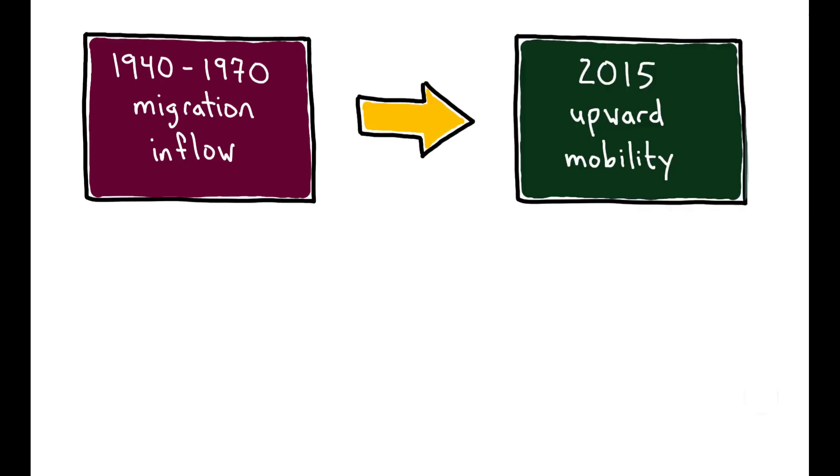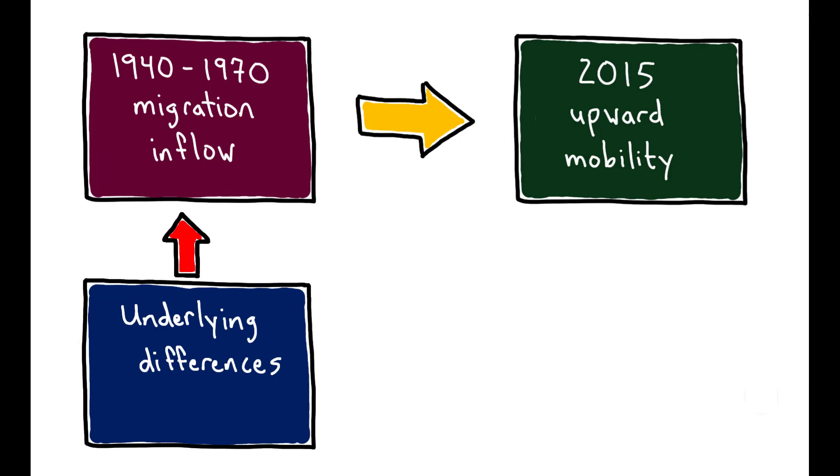Establishing a causal link between migration flows during the 20th century and upward mobility today is complicated by the fact that cities that attracted migrants may be fundamentally different from those that didn't. Thus, any divergent patterns in upward mobility across these areas today may derive from these underlying differences, rather than being driven by differential exposure to the Great Migration.